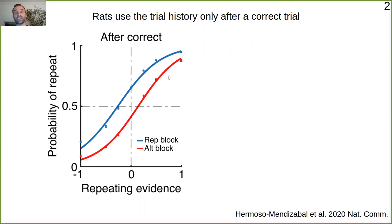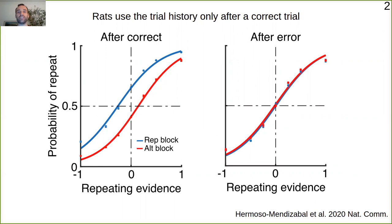As I was saying, this only happens after correct trials. After error trials rats don't use the trial history, completely ignoring the information contained in the trial-to-trial correlations. This is what we have called the reset strategy.